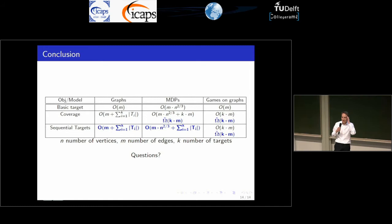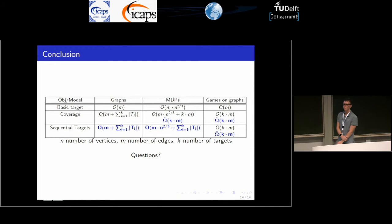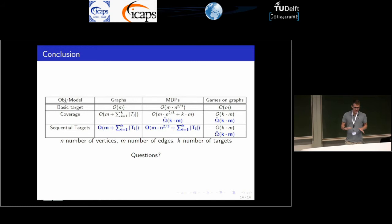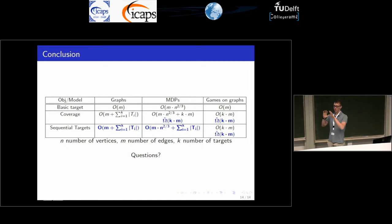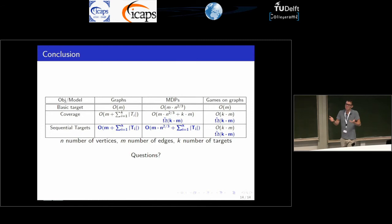Q: Some problems can be solved using heuristic search — can you say something about complexity in the presence of heuristics? A: Unfortunately we cannot say anything about heuristics; this work is about solving problems exactly. But it may hint that the coverage problem is harder, especially on MDPs and games, because of the lower bounds. If you have a very good heuristic it might still perform well.